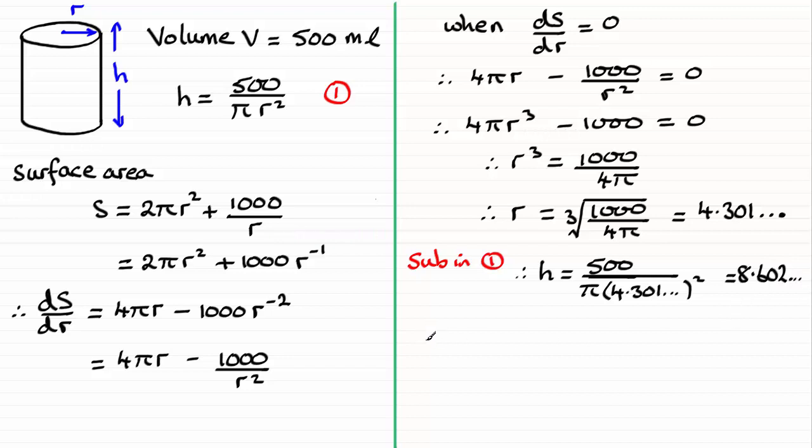So in summary then, we end up with the radius r equaling 4.30 centimeters and the height h is going to be 8.60 centimeters. Both of these results here are given to two decimal places, 2dp for short.